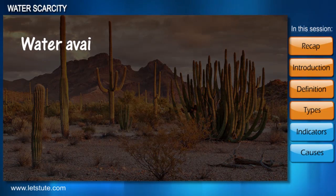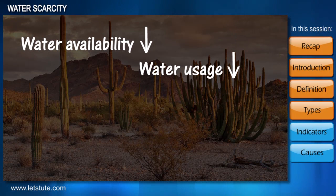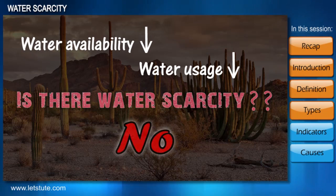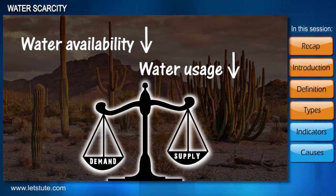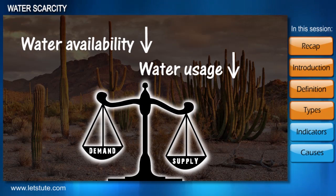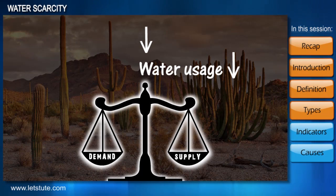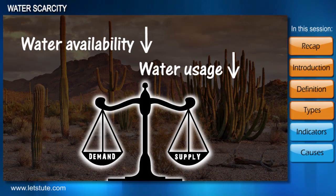In the first situation, natural water availability is low and actual usage is also low. Can we call this area water scarce? No — because water scarcity is an imbalance between demand and supply. In this case, the supply is less but the demand is also less, so there is no imbalance.